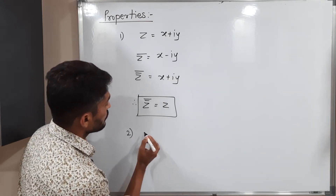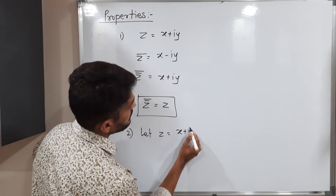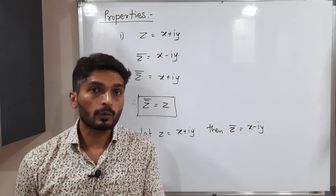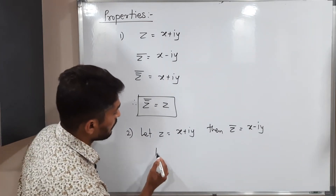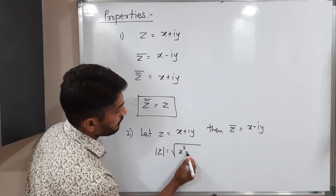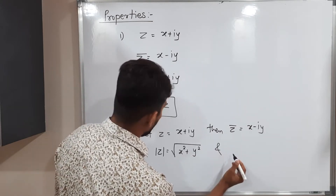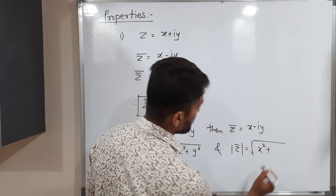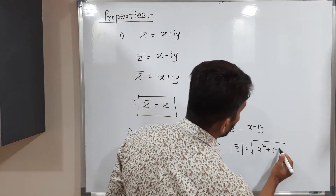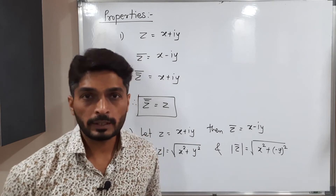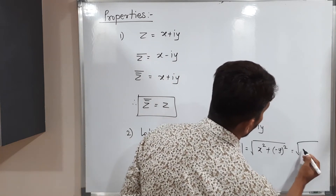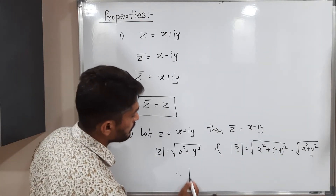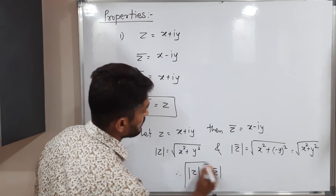Second property: let z equal x plus iy, so z-bar equals x minus iy. The modulus of z is the square root of x-squared plus y-squared. For mod z-bar, the imaginary part is minus y, but squaring it removes the negative sign, giving again the square root of x-squared plus y-squared. Therefore, mod z is equal to mod z-bar.